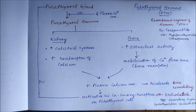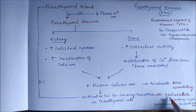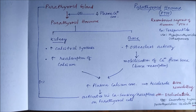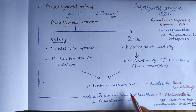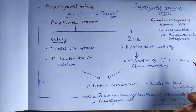In chronic kidney disease (CKD), we can use the drug etelcalcetide, which activates the calcium-sensing receptors on parathyroid cells and can be useful in secondary hyperparathyroidism in adults with chronic kidney disease.